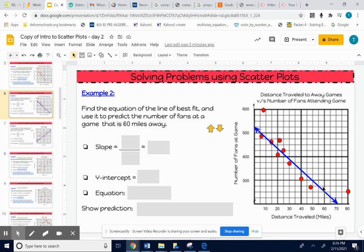Now you could use the picture of the graph. You could go to 60 miles on the x-axis, go up to your line (the blue line), go over - it looks like maybe 250 fans would be there. But we want to use the equation instead of the picture of the graph. It's just a different way to do it.